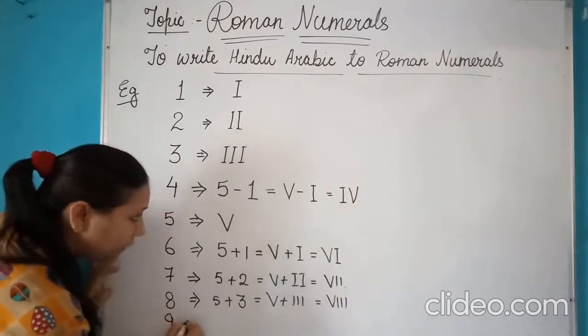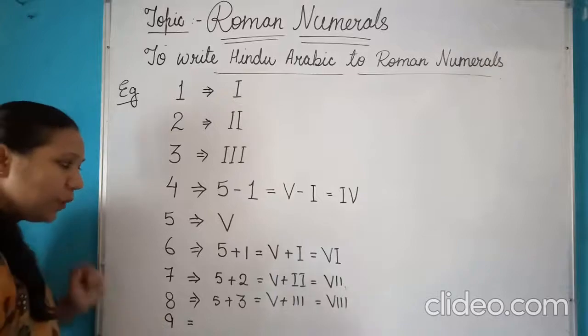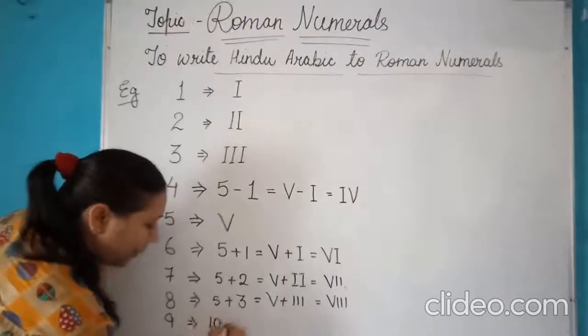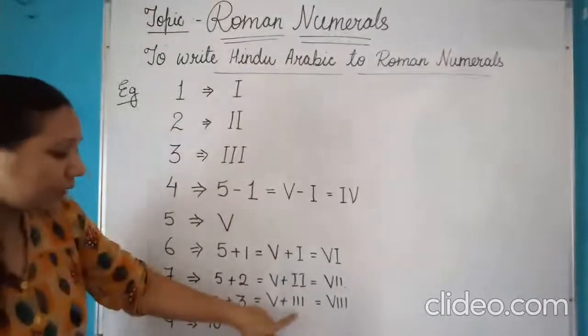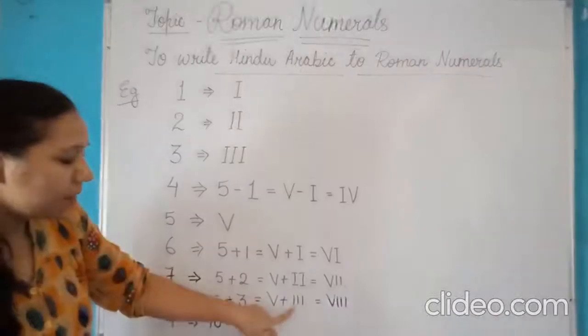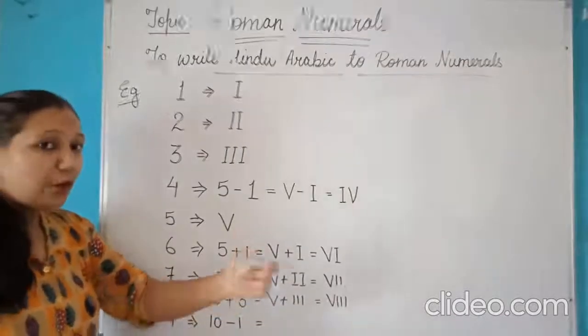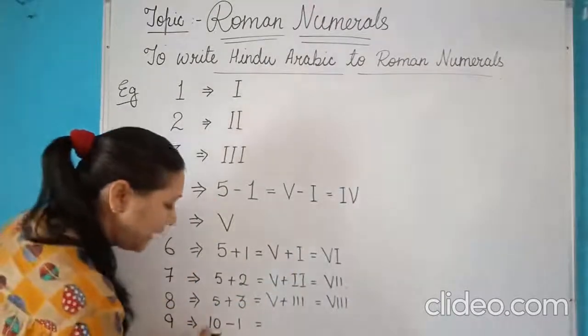Now coming to the symbol of 9. For symbol of 9, once again, like 4, we will write it as 10 minus 1. Because we can repeat the symbol of 1 only 3 times. We cannot repeat it 4 times. So it will be 10 minus 1.